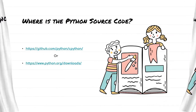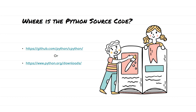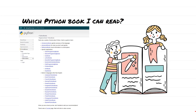So where is all the Python source code kept? Python source code is kept at github.com/python/cpython. You can go there and download the source code of Python if you want to explore it in more detail. The source code is also available at www.python.org/downloads. If you are interested in knowing which books you can read to learn more about Python, you can go to wiki.python.org/moin/PythonBooks.